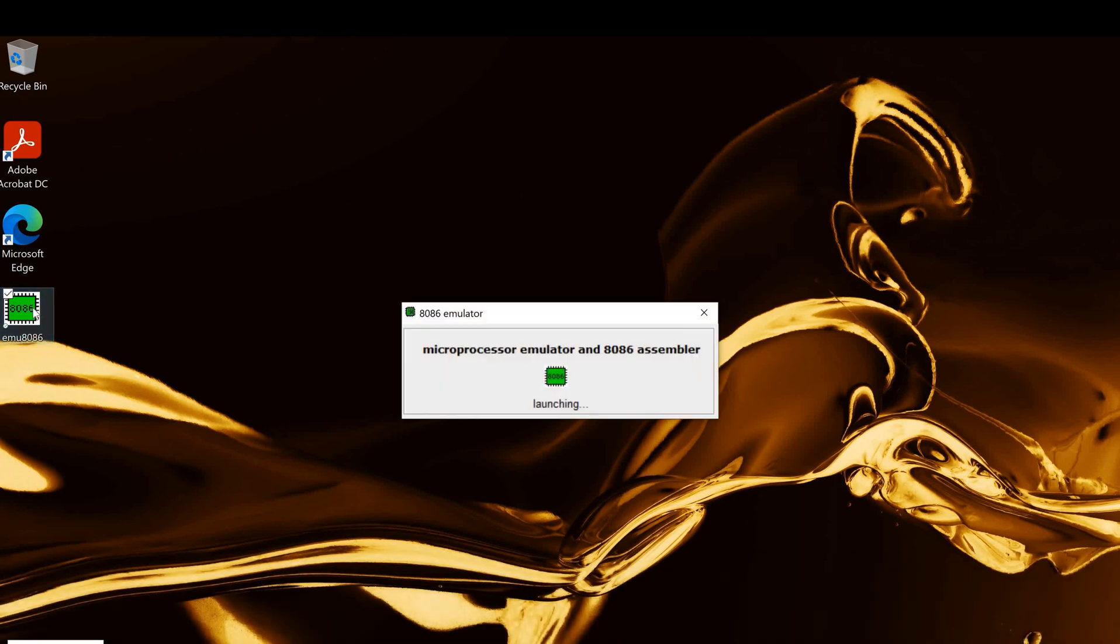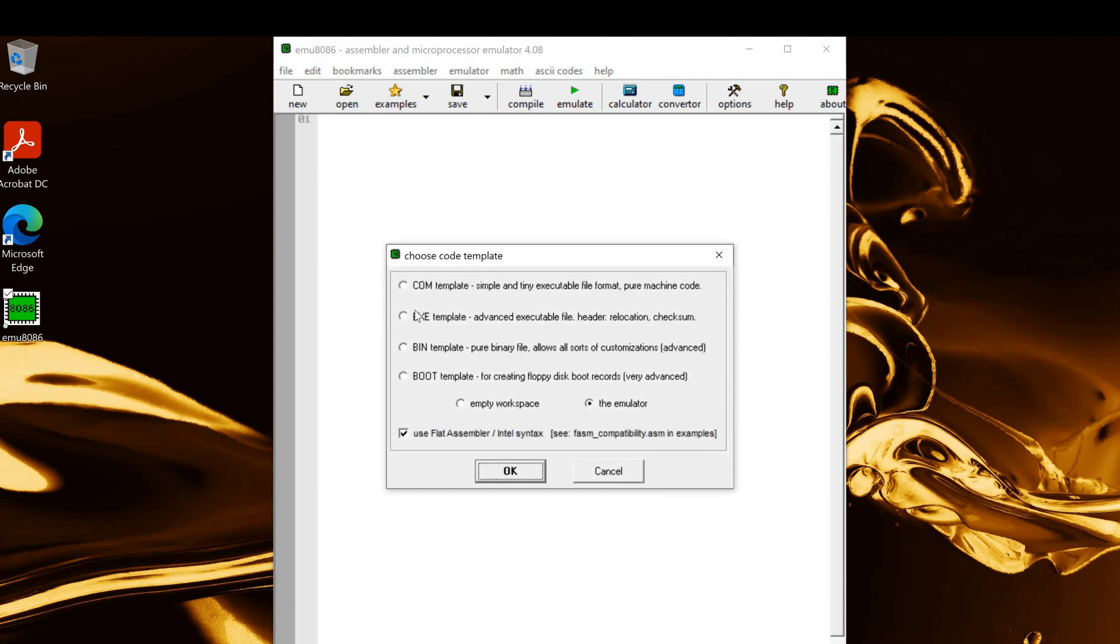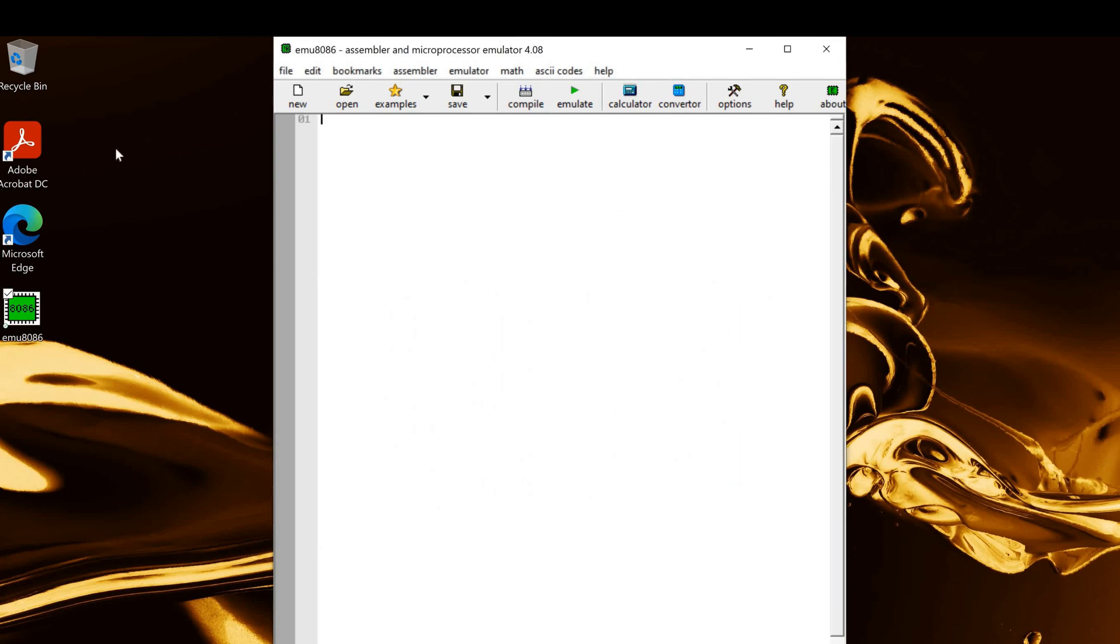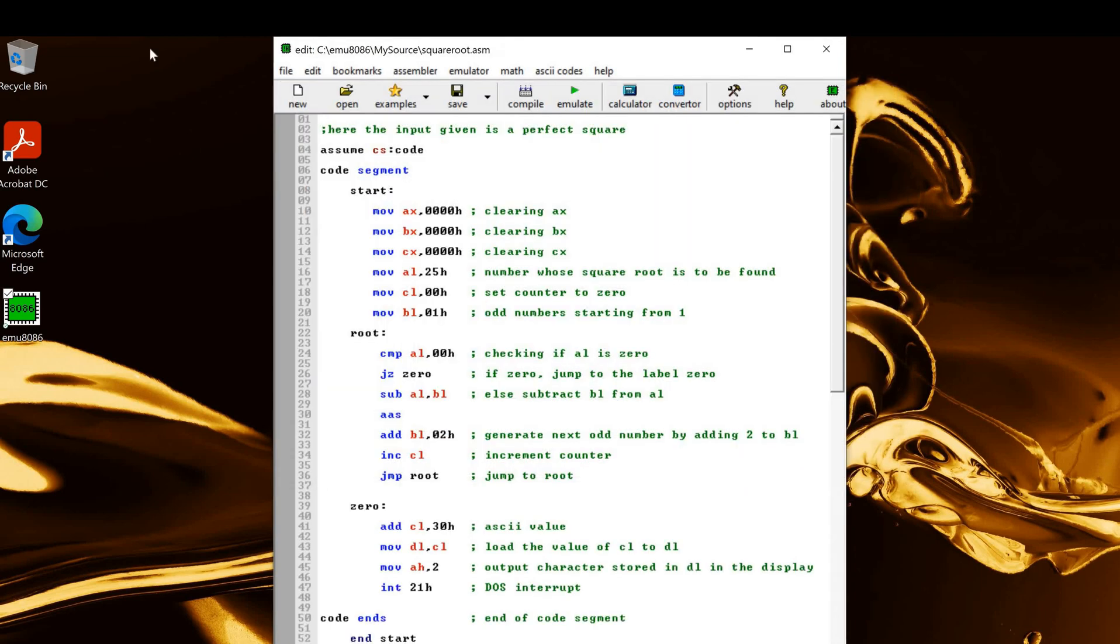First we'll open the 8086 emulator. We have options for new files, code examples, quick start, tutor, and recent files. On clicking the new option, we have different templates available or you can have an empty workspace. This is the place where you are running your program. Since I already have the file, I'll be opening it, which is saved as .asm. This is the code I had explained before.